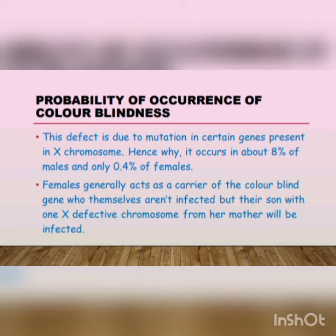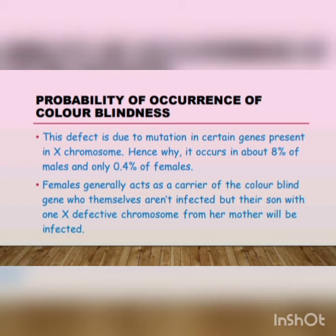Probability of occurrence: this defect is due to mutation in certain genes present in X-chromosomes, hence it occurs in about 8% of males and only about 0.4% of females. Females act as carriers of the colorblind gene who themselves aren't affected, but their son with one defective X-chromosome inherited from his mother will be affected.